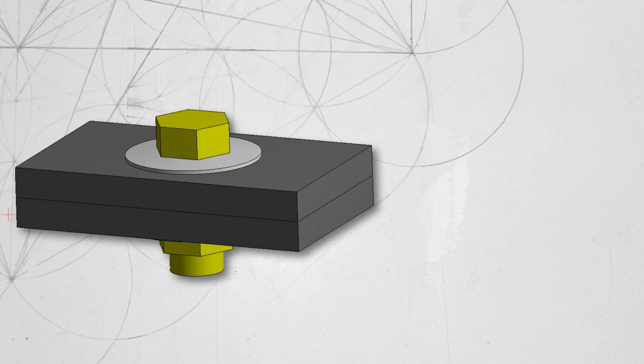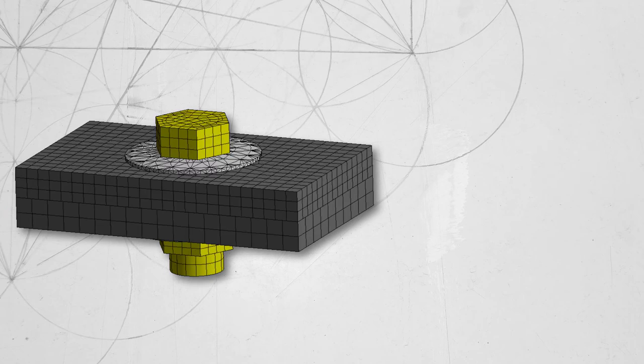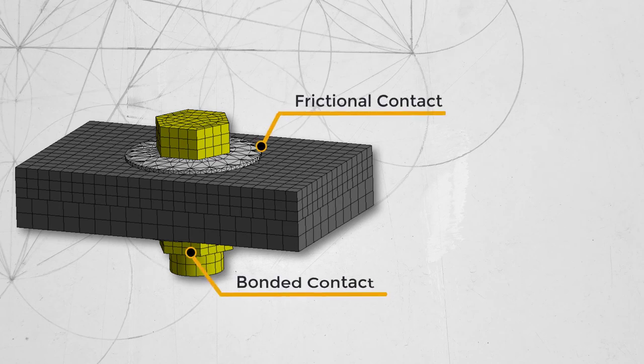If we wish to model this system, then we need to model the washer as a separate solid body, use frictional contact between the bolt head and the washer, and use bonded contacts at threaded locations.